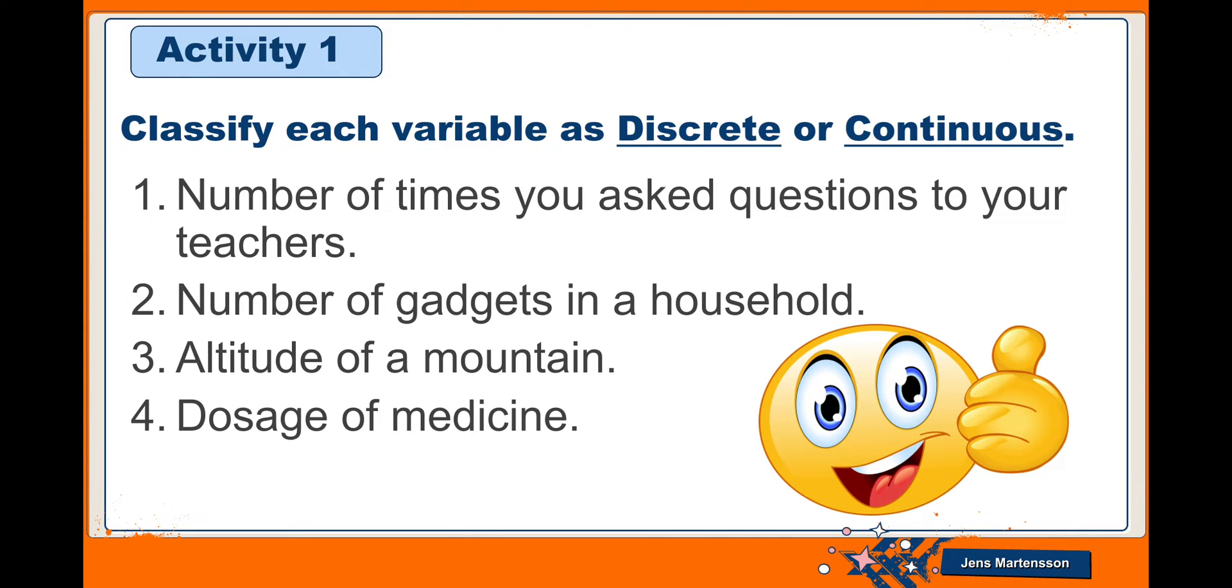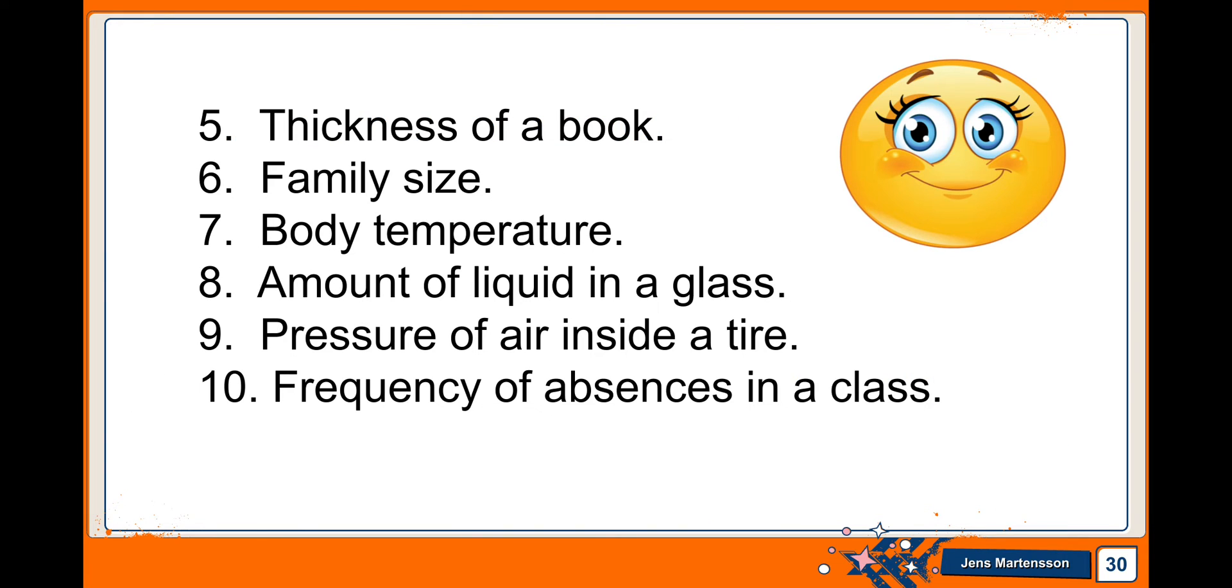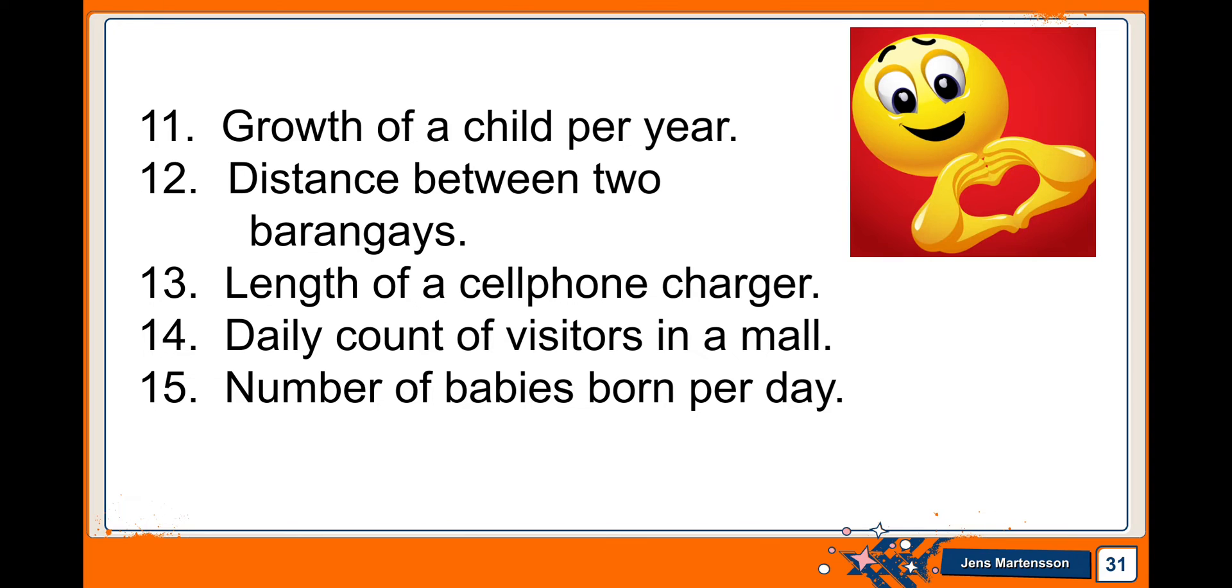For your activity, you're going to classify each variable as discrete or continuous. We have number one, number of times you ask questions to your teachers; two, number of gadgets in a household; three, altitude of a mountain; four, dosage of medicine; five, thickness of a book; six, family size; seven, body temperature; eight, amount of liquid in a glass; nine, pressure of air inside a tire; ten, frequency of absences in a class; eleven, growth of a child per year; twelve, distance between two barangays; thirteen, length of cell phone charger; fourteen, daily count of visitors in a mall; fifteen, number of babies born per day.